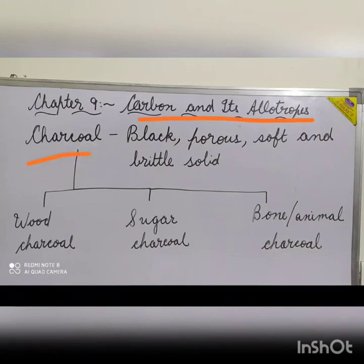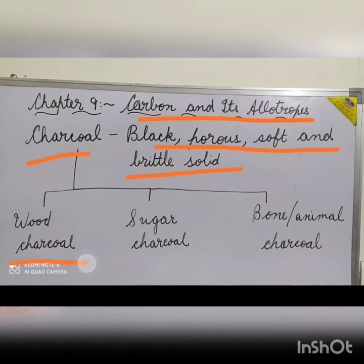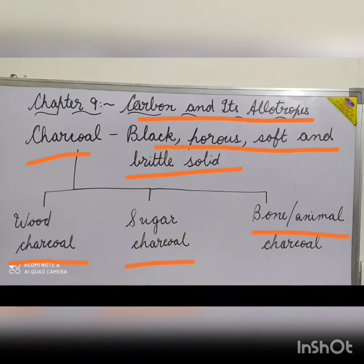Charcoal is a black, porous, soft and brittle solid which is present in several varieties. Every variety is named after the source from which it is obtained. For example, wood charcoal is obtained from wood, sugar charcoal is obtained from sugar, and bone or animal charcoal is obtained from bones when they are burnt in the absence of air.